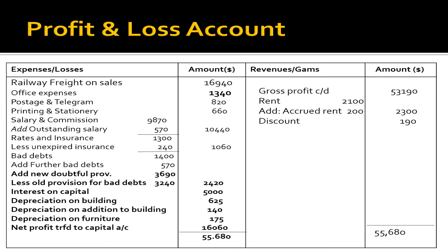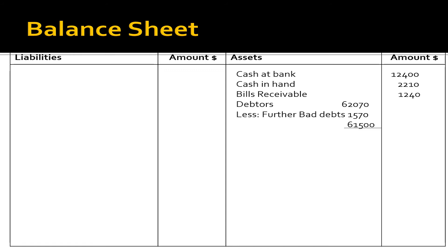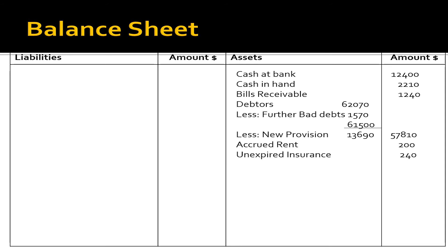Now let's start with the balance sheet as at 31st March 2014. On the asset side: cash at bank $12,400; cash in hand $2,210; bills receivables $1,240; debtors $62,070 less further bad debts $570 less new provision $3,690, coming to $57,810; accrued rent $200; and prepaid (unexpired) insurance $240.